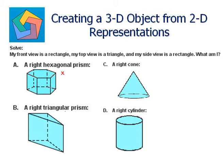The top view is not a triangle in a right hexagonal prism. The front view here in a right cone is a triangle, not a rectangle. So right cone cannot be the answer. A right cylinder's top view is a circle, but we need the top view to be a triangle. So this cannot be the answer either.